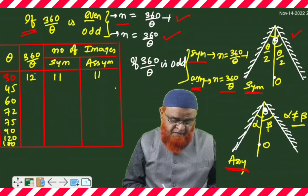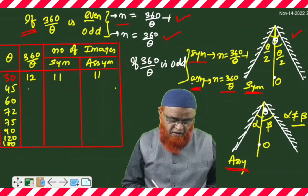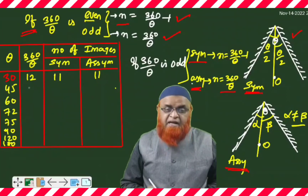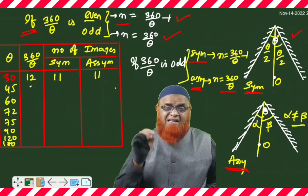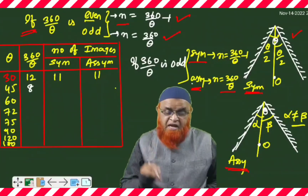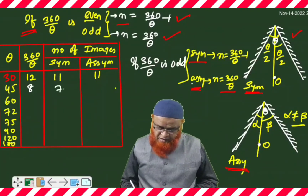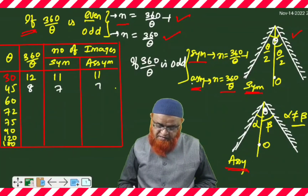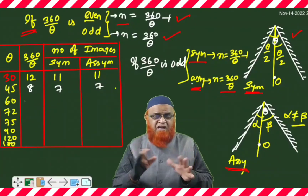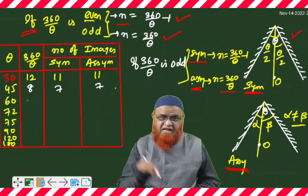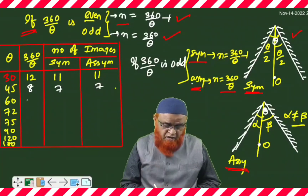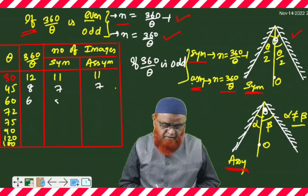For 45 degrees, 360 divided by 45 gives 8, which is even, so the number of images is 7 in both cases. For 60 degrees, 360 divided by 60 is 6, which is also even, so the answer is 5 and 5.